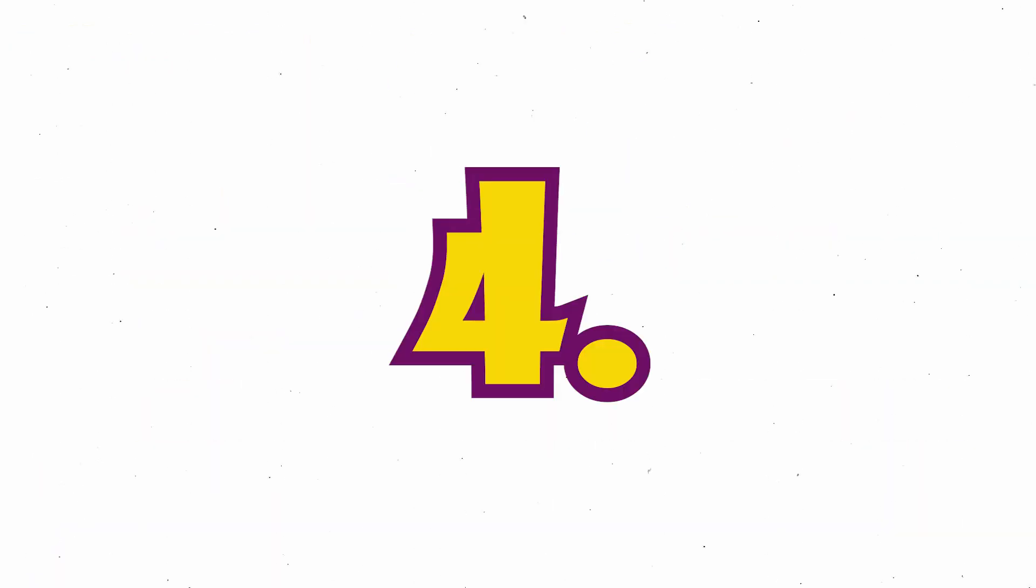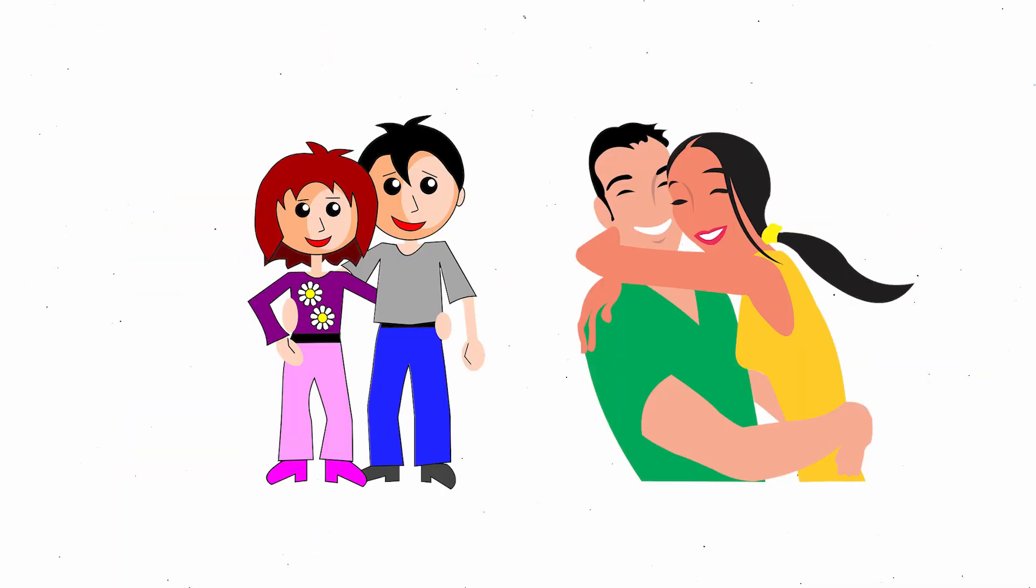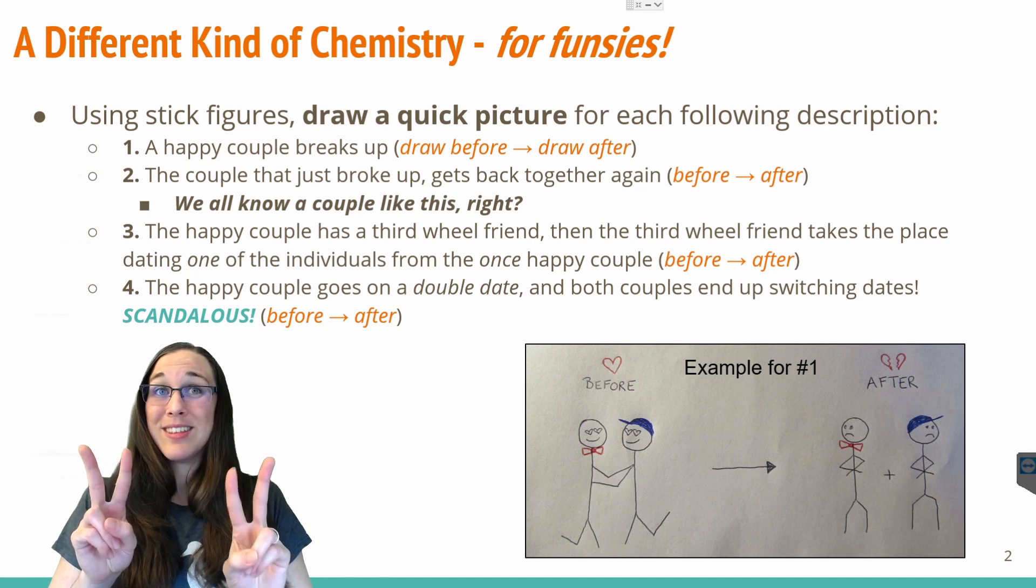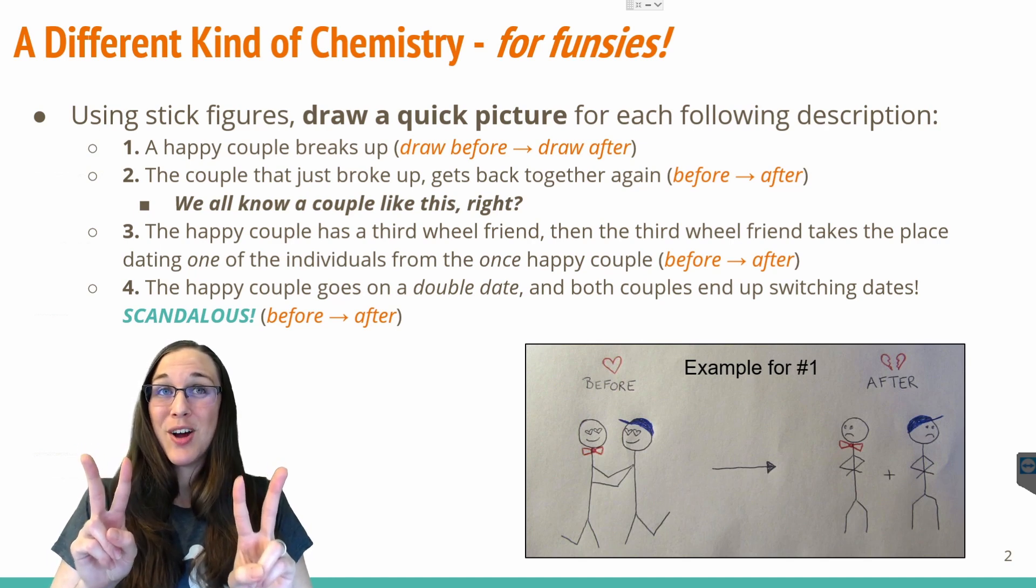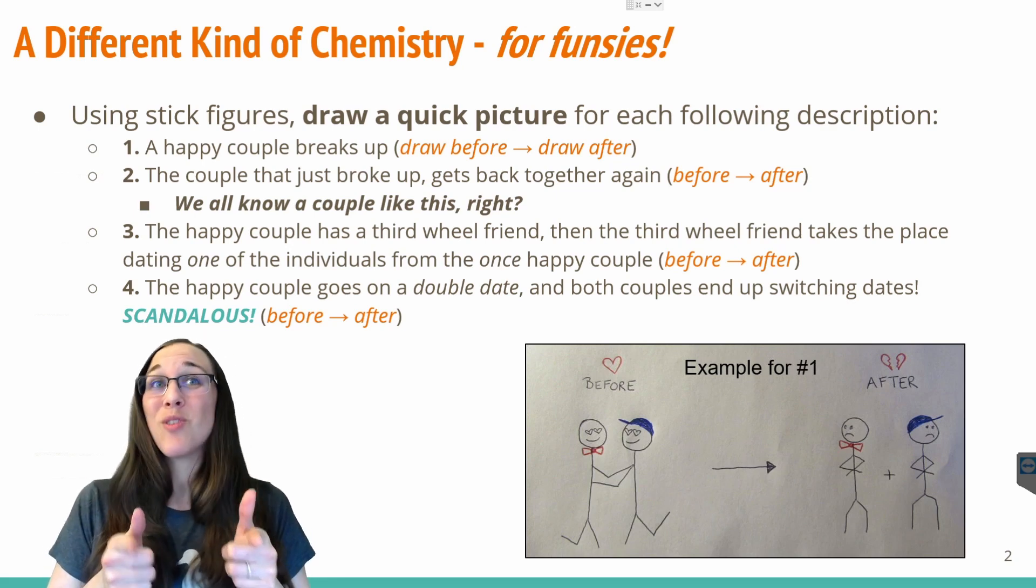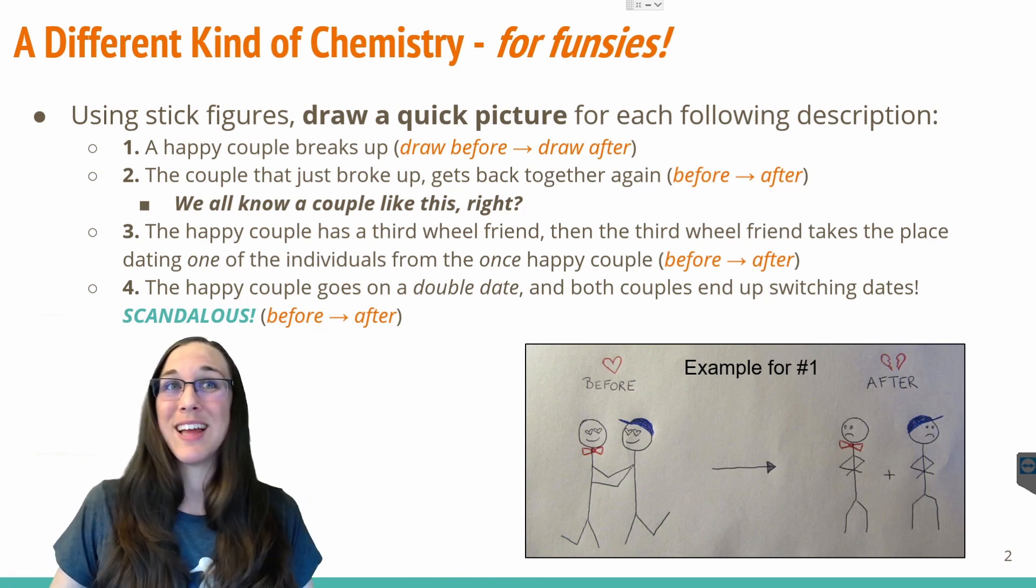And the fourth is the happy couple goes on a double date. And then what I want you to draw is after they end up switching their dates. So, you know, this one's going out with this one, but now this one's going out with this one by the end of the scenario. That's your drawing number four. Go ahead and pause the video here and draw out those silly stick figure scenarios on your paper because we are going to use them through the lesson.